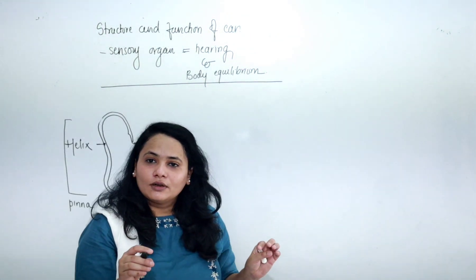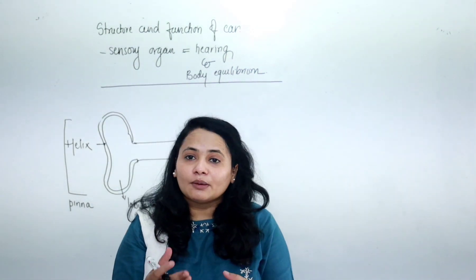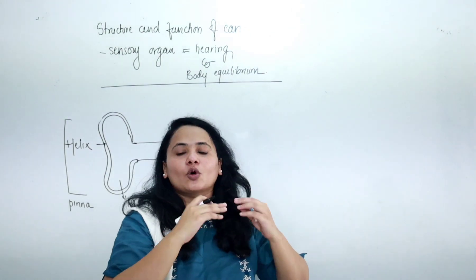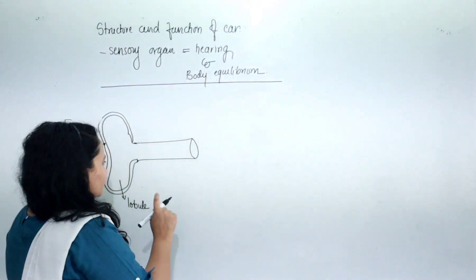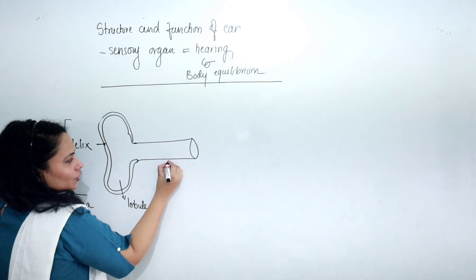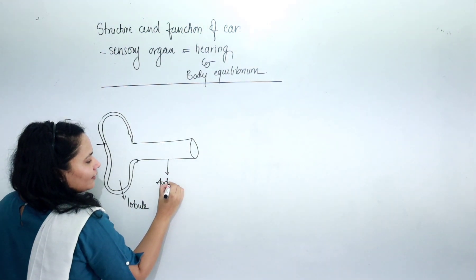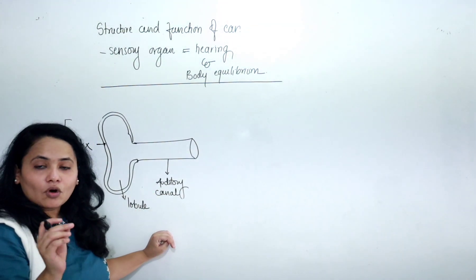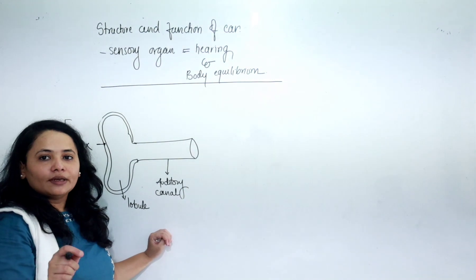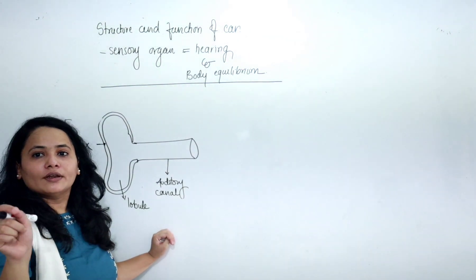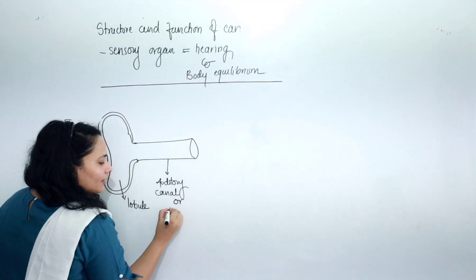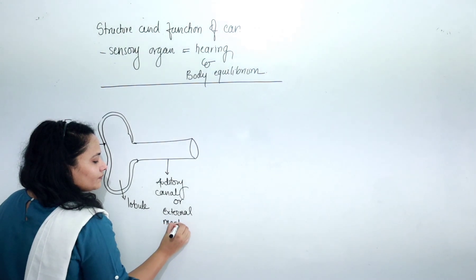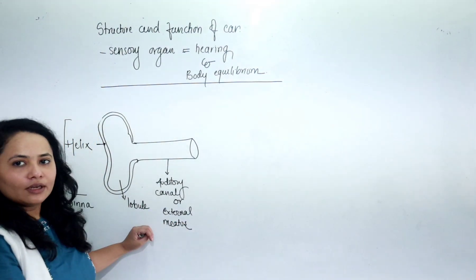Is pinna vestigial? It is believed to be vestigial, but some scientists say that its function is to collect sound waves and focus them towards the auditory canal. The pinna leads to a structure called the auditory canal, also known as the external auditory meatus.